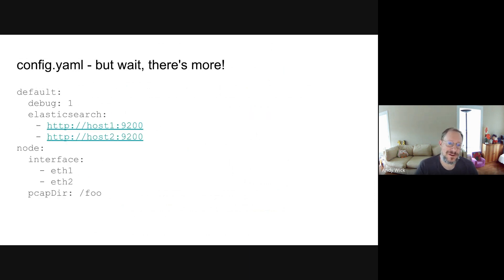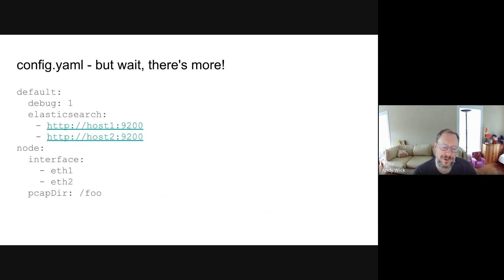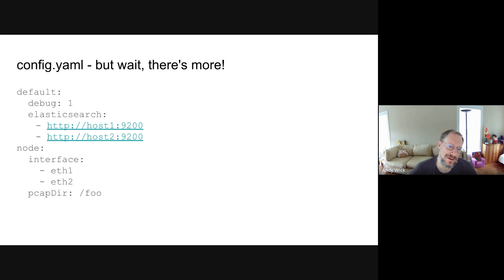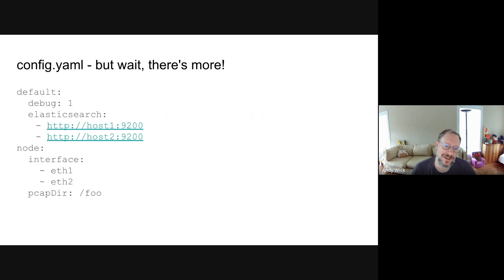But wait, there's more. Things that are arrays you can now actually specify as arrays. Previously, you would have one line and there'd be either comma-separated or semicolon-separated values. Now in both YAML and JSON, you can do arrays of those variables that contain multiple values. You can still do it the old way with commas and semicolons, or you can now do them as proper arrays. This makes it a lot easier to specify and read your configuration.